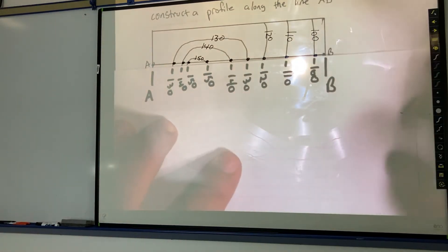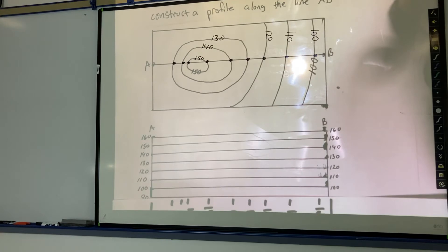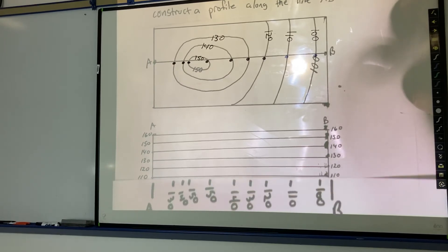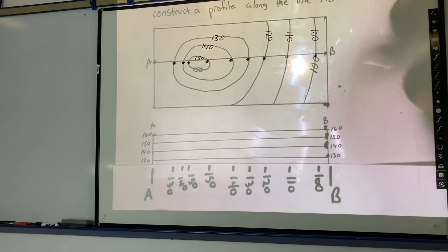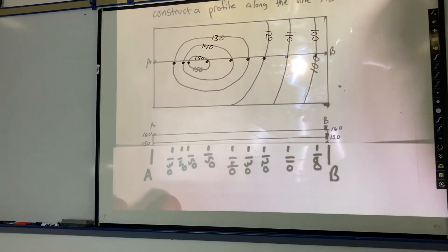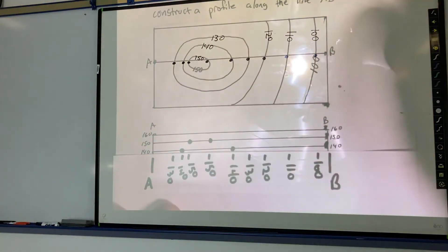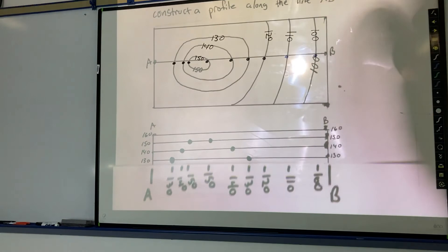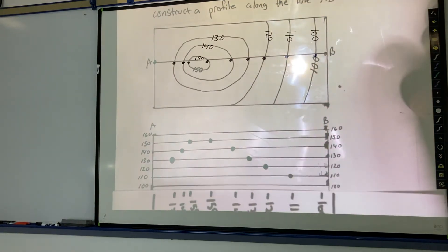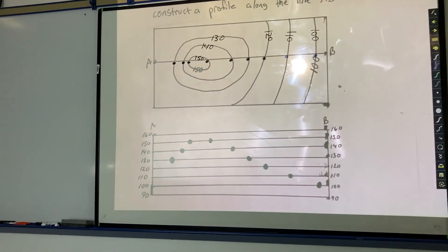All right, so now what I can do is take this and go down to my graph here and start to plot these points on the graph. All right, so I take my paper here, line up to A and B and start to go 130, 130, 140, 150, 150, 140, 130, 120, 110, and 100. All right, so I have my data points plotted on my graph now.